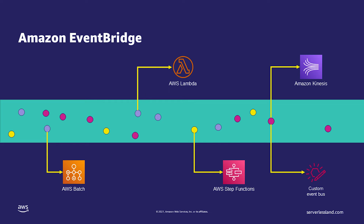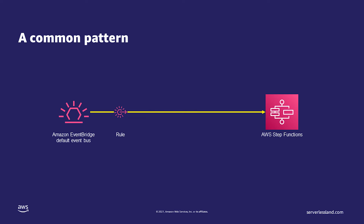Using EventBridge, data can be sent to any number of targets. For example, a common pattern is to invoke an AWS Step Functions workflow. When a rule targeting a Step Functions workflow matches an event in the EventBridge bus, the workflow is invoked directly by the EventBridge service, and the event is passed in as the input. Using this pattern, developers can build asynchronous, event-driven applications using real-time data.